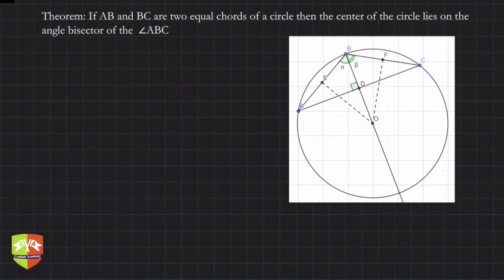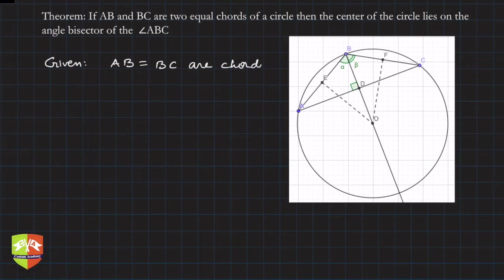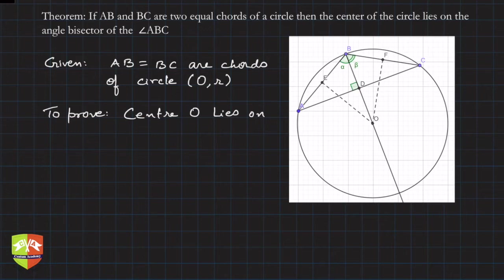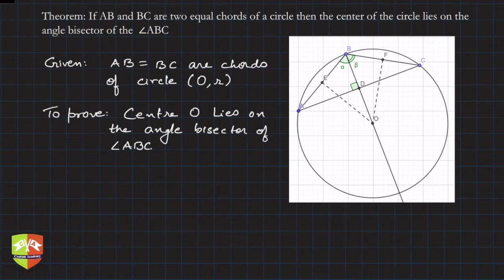The conventional proof methodology starts with what's given. The given part is that AB is equal to BC — these are chords of circle O(r), where O is the center and r is the radius. This is how circles are depicted. We need to prove that center O lies on the angle bisector of angle ABC.